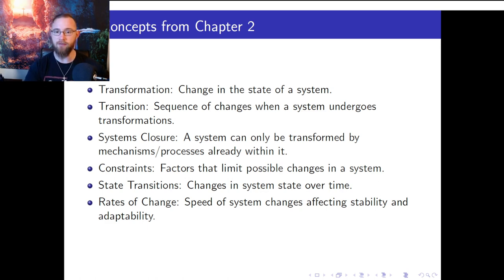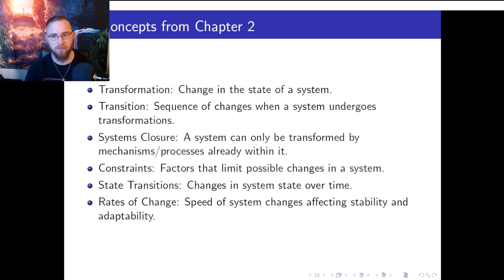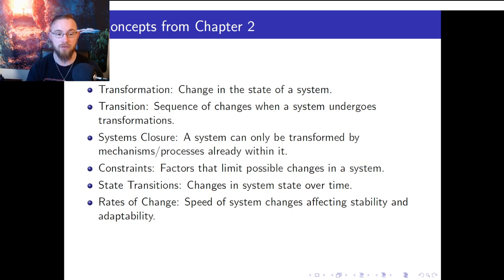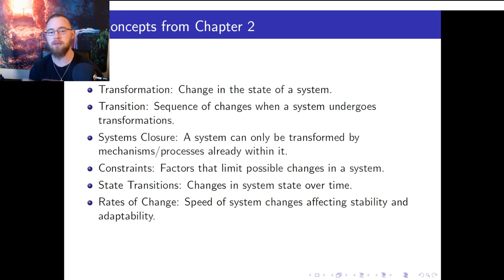Ashby discusses different types of transformations. A one-to-one transformation is where a single operand is transformed into a single result by a single operator. Many-to-one transformation involves multiple operands being transformed into a single result by a single operator. An identical transformation occurs when the operand and the result of a transformation are the same. Ashby notes that transformations can be repeated over time, leading to a sequence of changes that can be described as a product or composition of individual transformations.